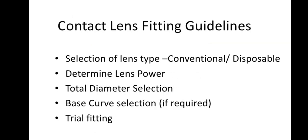Contact lens fitting guidelines begin with selection of lens type — either conventional or disposable. Conventional lenses have a one-year lifespan, while disposable lenses are replaced monthly. Next, determine lens power, total diameter, base curve selection, and trial fitting.